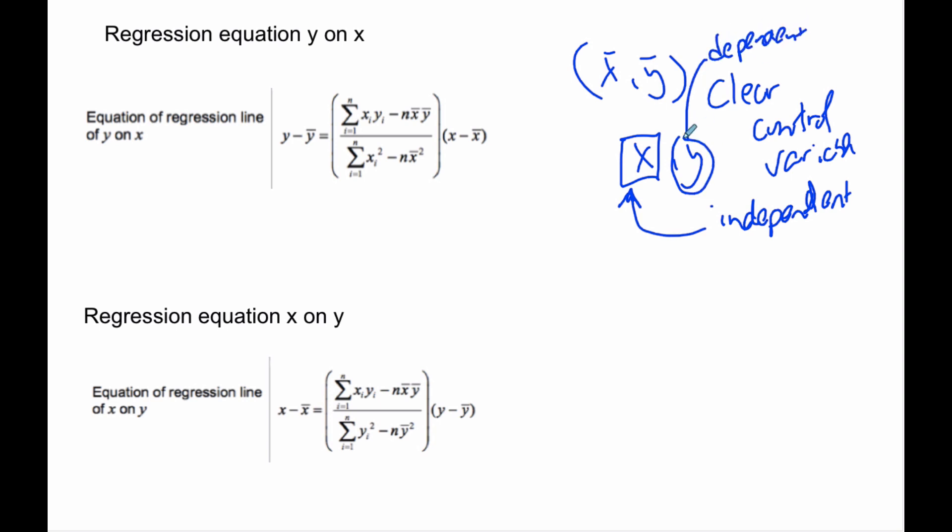If it is clear which one is independent or controls, then we will treat that as the X value, and we will do a Y on X regression, if it's clear.